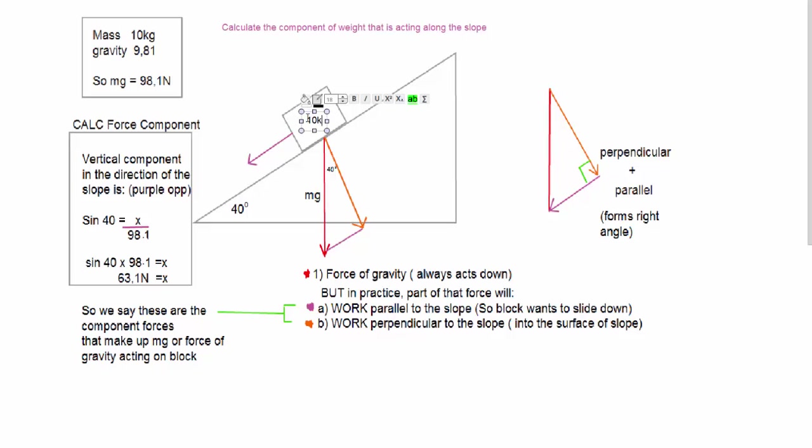Mass is 10 kilograms. The first thing we want to do is to work out the value of the force weight. Quite simply we just calculate mass times gravity. Mass is 10 kilograms, the standard SI units for mass, and gravity is 9.81 meters per second squared. So it's an acceleration working on the mass. So we do this calculation, mg will be equal to 9.81 times 10 which is 98.1 Newtons.